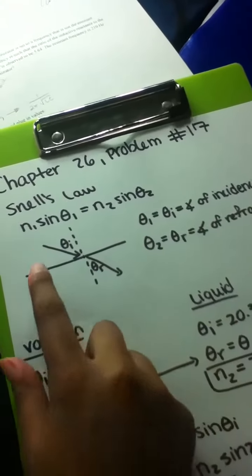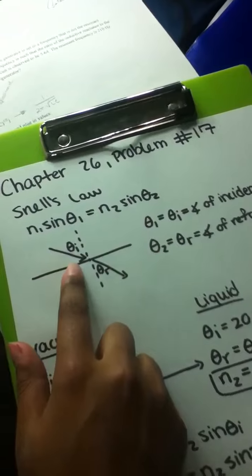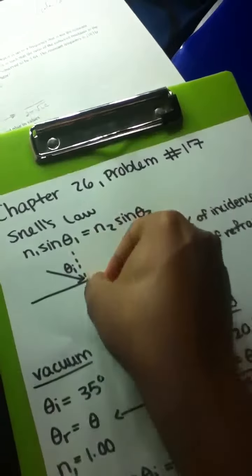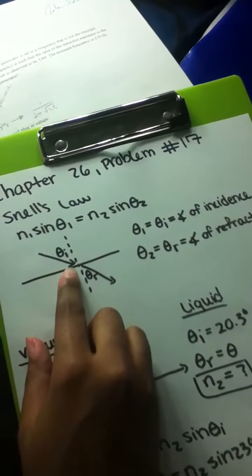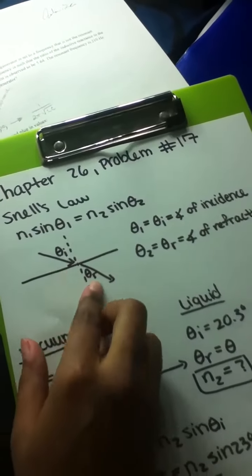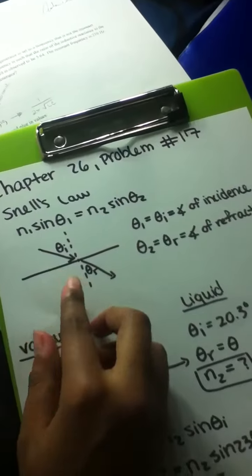When an incident ray doesn't strike an interface at a normal - this right here is the normal - so when the incident ray strikes it at an angle, the transmitted ray enters the medium and changes direction, or the ray is refracted.